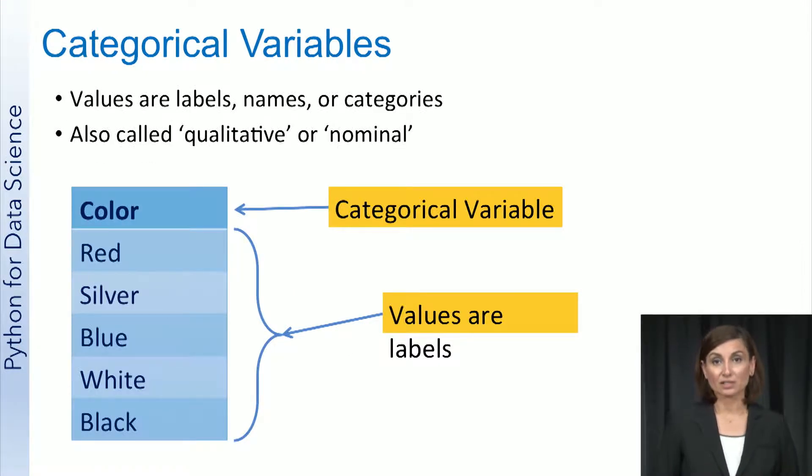A variable with labels, names, or categories for values instead of numbers are called categorical variables. For example, a variable that describes the color of an item, such as the color of a car, can have values such as red, silver, blue, and black. These are non-numeric values that describe some quality or characteristics of an entity. These values can be thought of as names or labels that can be sorted into categories. Therefore, categorical variables are also referred to as qualitative variables or nominal variables.